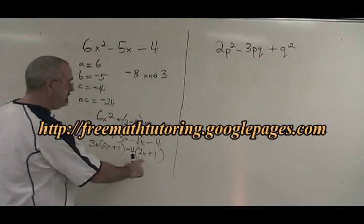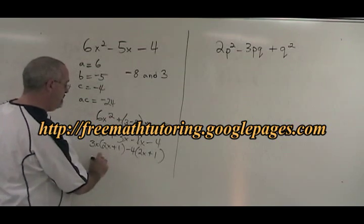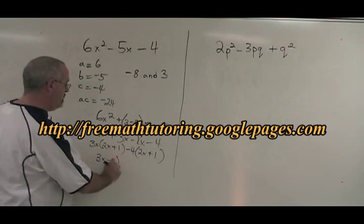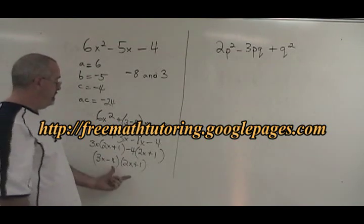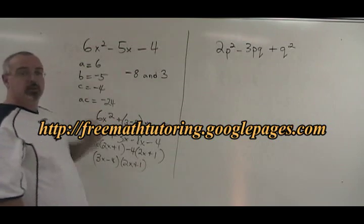We have achieved what we want, which is that these two brackets are the same. We can rewrite this 3x minus 4 in a bracket, times 2x plus 1, and we have our final answer. If we multiply these together, we will get our original question.